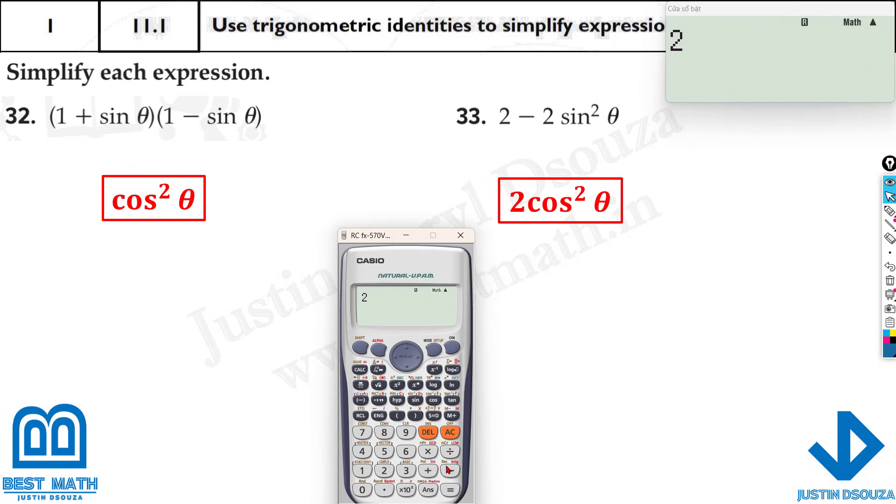And now here it's 2 minus 2 sine square theta. And calculate it at 2. The answer is 0.346. Now if you do this 2 cos square theta calculated to 0.346. Yes that's the correct answer.